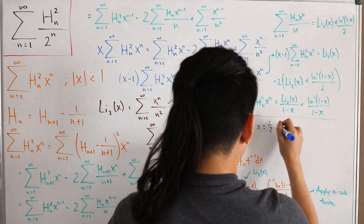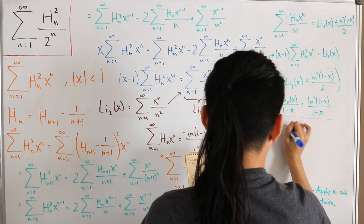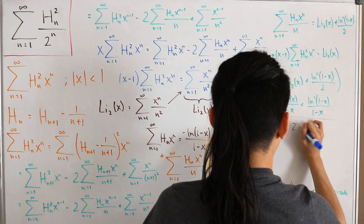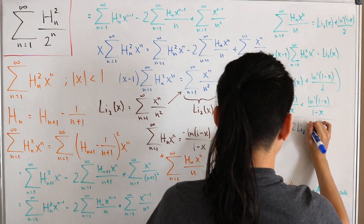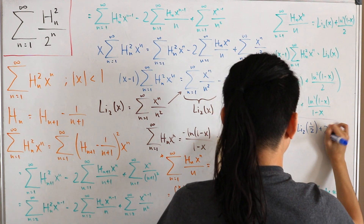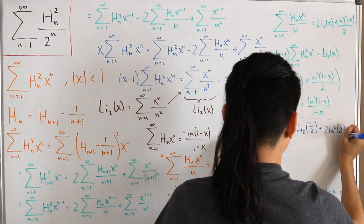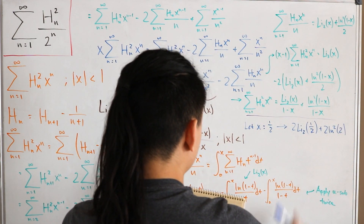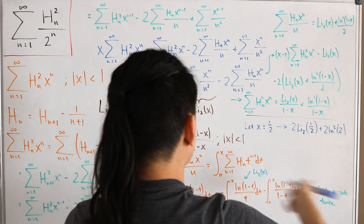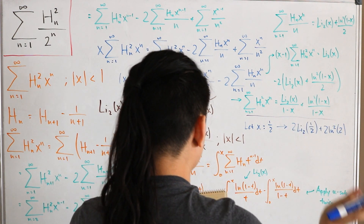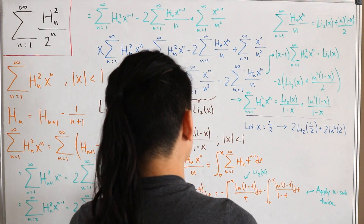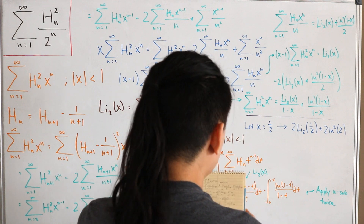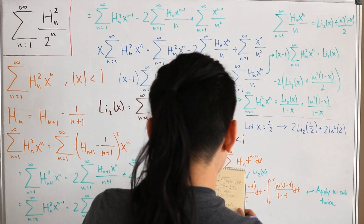Now we plug in x = 1/2, which is exactly the sum we want to evaluate. The right-hand side becomes 2·Li₂(1/2) + 2·ln²(2). The special value Li₂(1/2) equals π²/12 − ln²(2)/2 — I'll leave deriving that as an exercise or save it for another video.